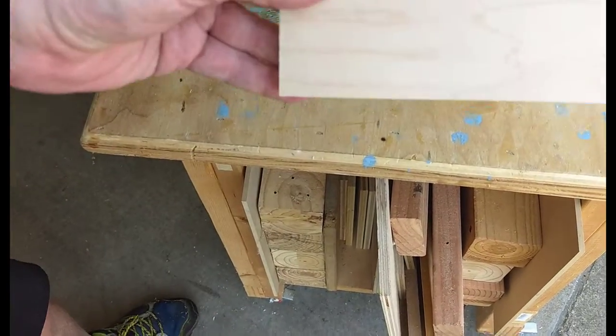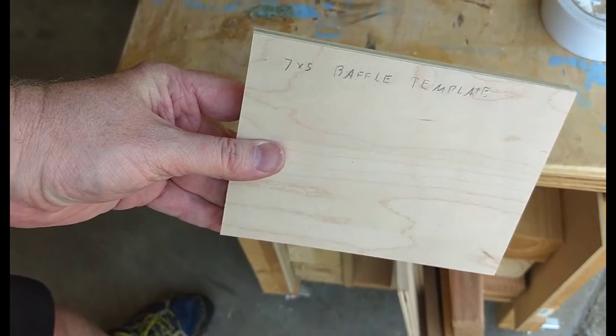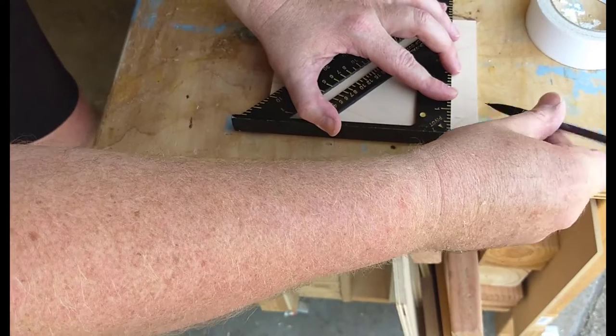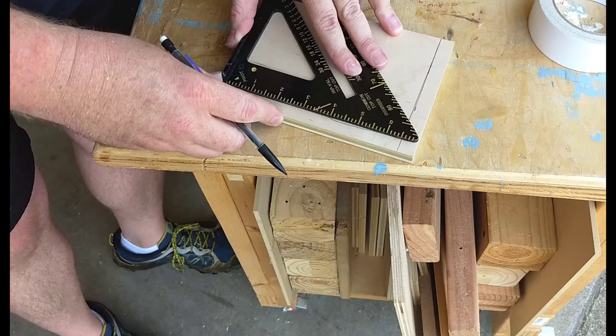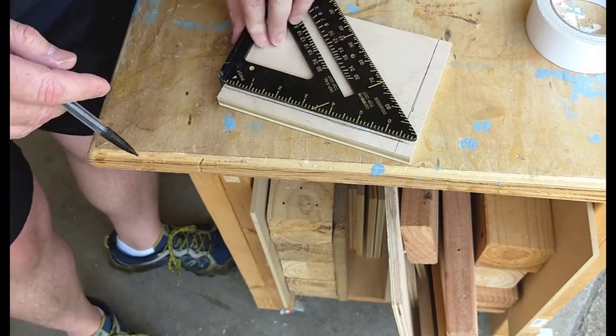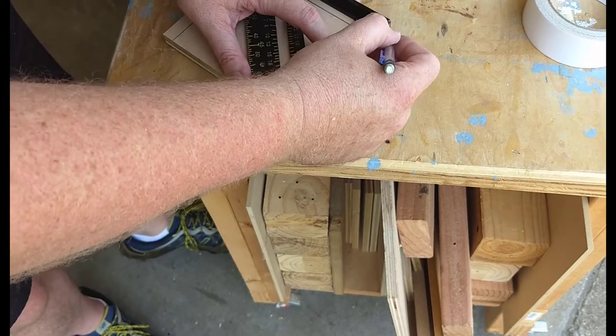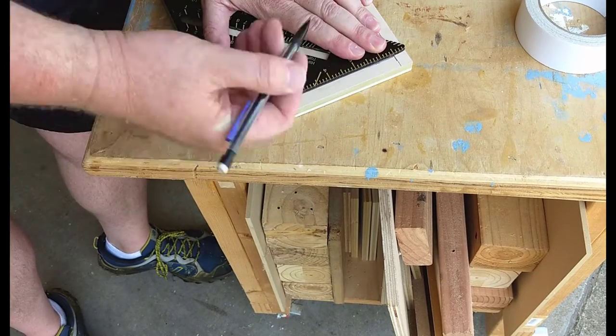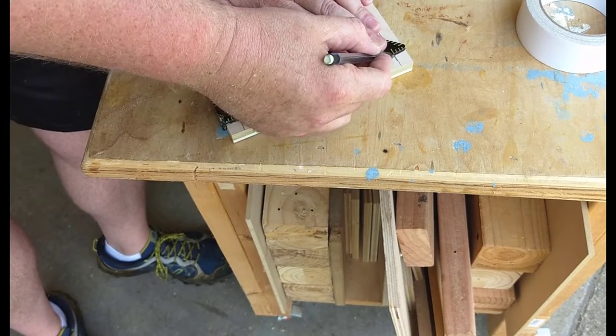I always make test holes in scrap wood to make sure the drivers will fit properly. Now I need to transfer those test holes to a baffle template that I will then use to position my speakers perfectly on the baffle of the final project. I start by marking a half inch around the template to account for the top, bottom, and sides of the enclosure. Then I trace out the speaker locations using my test holes.